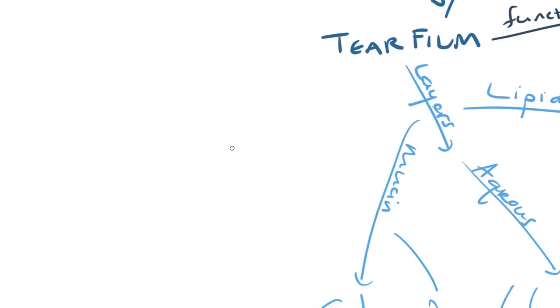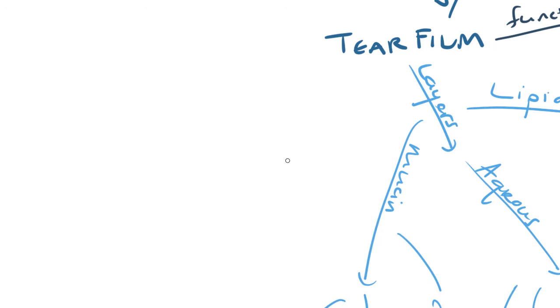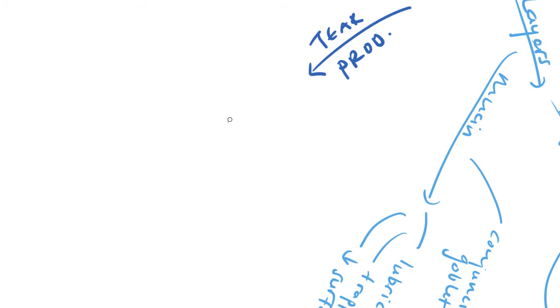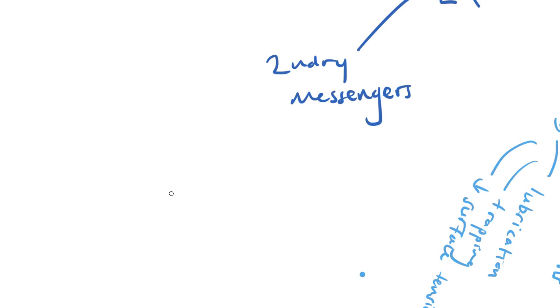So when we're talking about tear secretion, what we need to realize is that it is predominantly based on secondary messenger function. So tear production. And the major point here is that it's secondary messengers that carry this function out. So how this functions is that we have our secretors, our tear secretors, which we spoke about a bit earlier. And these all receive neurological input, both from the parasympathetic and the sympathetic systems. The parasympathetic system or the sympathetic system then stimulate these tear secretors.